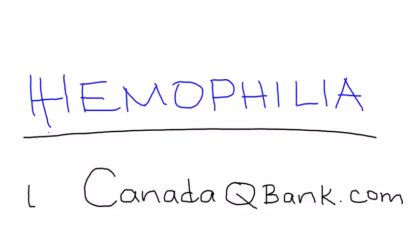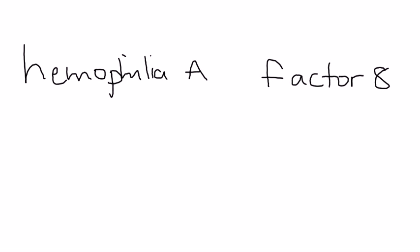Hemophilia is a topic with two main types we're going to discuss: hemophilia A and hemophilia B. Hemophilia A is essentially a deficiency in factor VIII, and they always use Roman numerals.